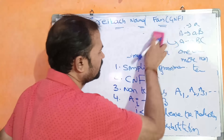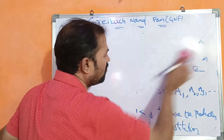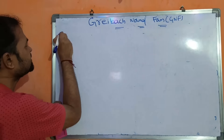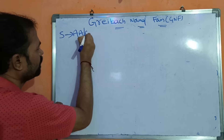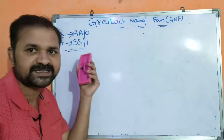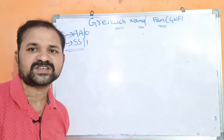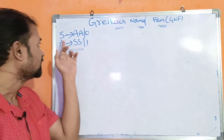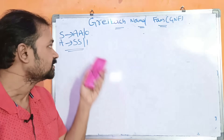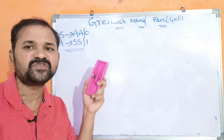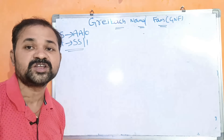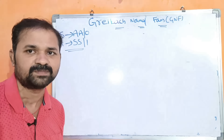Now let us see an example — convert a context-free grammar into GNF form. We have two productions: S implies A A | 0, and A implies S S | 1. First, we check for useless symbols — there are none. This grammar does not contain epsilon or unit productions, so it is already simplified. The grammar is also already in Chomsky Normal Form.